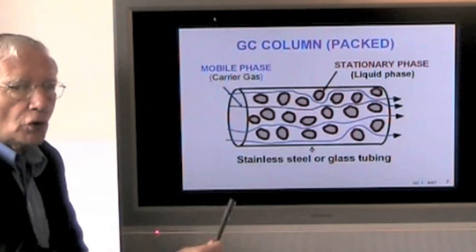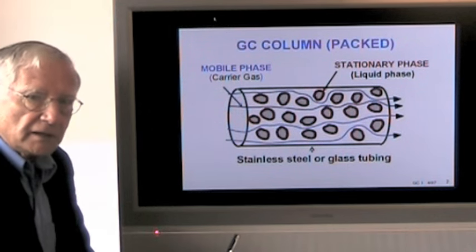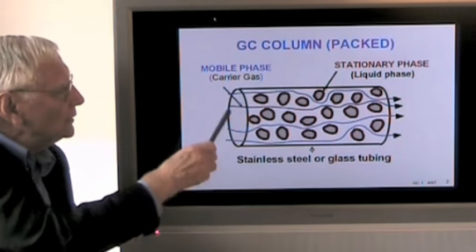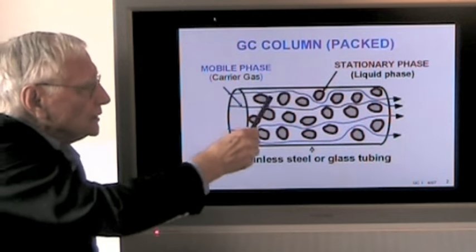The mobile phase is also called a carrier gas. Typically, it's helium, sometimes nitrogen, sometimes hydrogen. The carrier gas flows constantly through the column.